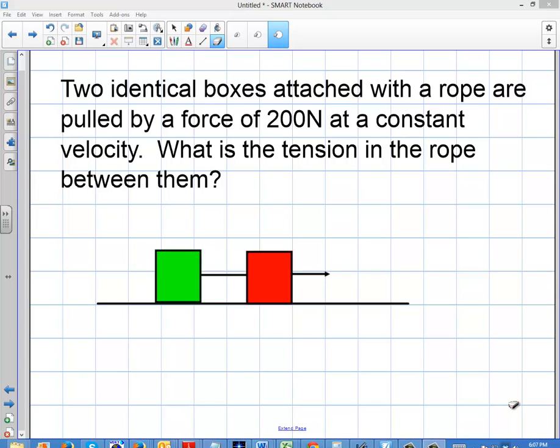Alright, welcome to this problem. In this problem we're dealing with two identical boxes that are attached with a rope and they are pulled by a constant force of 200 newtons at a constant velocity. What is the tension in the rope between them?